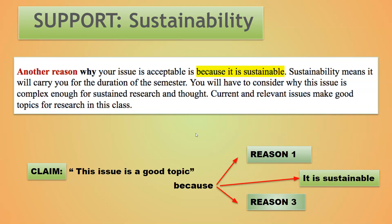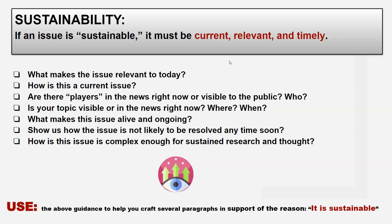Another reason your issue is acceptable is because it is sustainable, meaning it will carry you for the 15 weeks of the semester. You'll have to consider why this issue is complex enough for sustained research and thought. Current and relevant issues make good topics for research in this class. If an issue is sustainable, it must be current, relevant, and timely. Ask: What makes the issue relevant to today? How is this a current issue? Are there players in the news right now? Is your topic visible in the news? What makes this issue alive and ongoing, and how is it complex enough for sustained research?